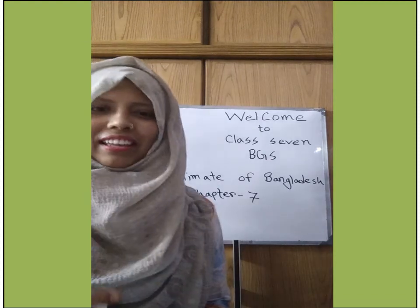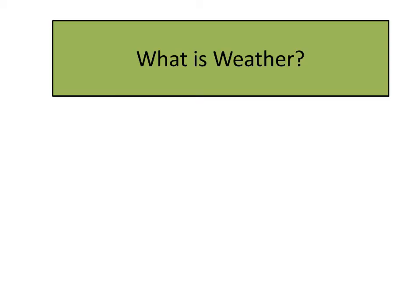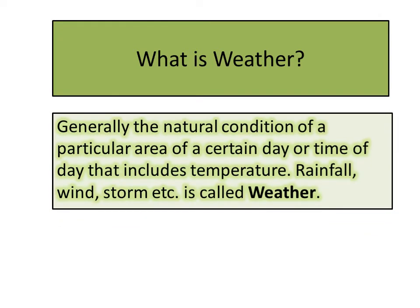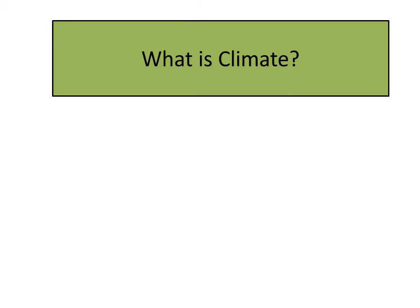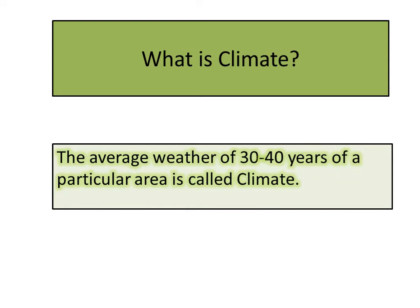Our today's topic is Climate of Bangladesh, from Chapter 7. So, what is weather? Generally, the natural condition of a particular area on a certain day or time of day — that includes temperature, rainfall, wind, storm, etc. — is called weather. Do you know what is climate? The average weather of 30 to 40 years of a particular area is called climate.